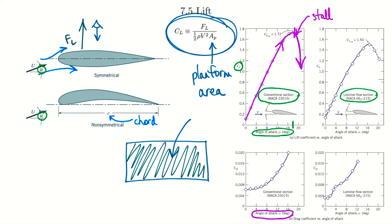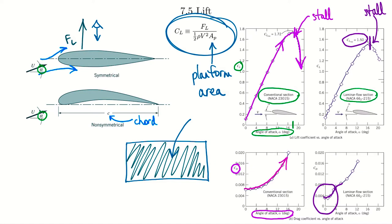Correspondingly, as you increase the angle of attack, you see the drag coefficient just goes up and up because now the wing is facing the flow more - there's a lot more pressure drag. So the aircraft has to put a lot more power in to fight against drag forces. The laminar airfoil tends to operate better at a much lower angle of attack because you want the flow to stay as laminar as possible. We're seeing a lower maximum lift coefficient, the stall occurs at a lower angle of attack, but in that zone you actually have very low drag coefficients. If you compare the two side by side, there's a much lower drag coefficient for those laminar flow airfoils.